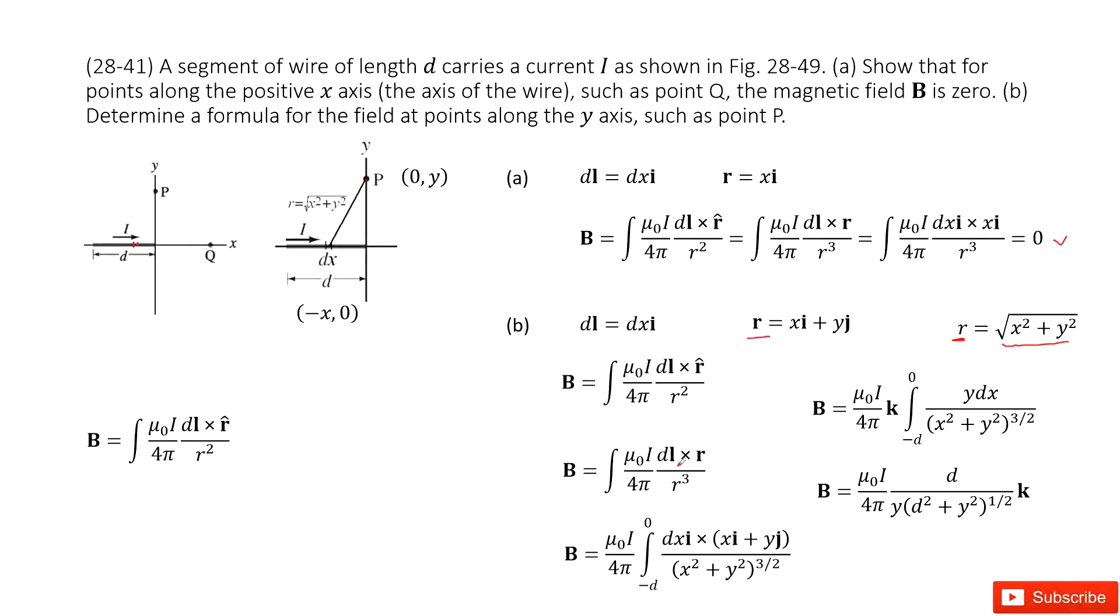Now, similarly, we can input DL and R inside. You can see I cross I is zero. So now the only component that survives is I cross J. I cross J is K component. So you write it there and then it becomes Dx, Y. Dx and Y. Then do the integral, and we get the answer there. Thank you.